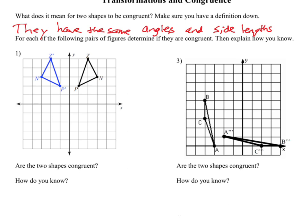Welcome back. On number one, yes, those two shapes are congruent. They have the same side lengths and same angles. You should have an answer here for why.